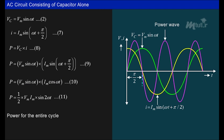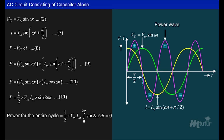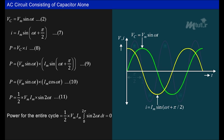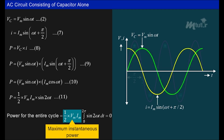The power for the entire cycle can be found by integrating the instantaneous power over the limits 0 to 2π, which equals zero. This is because the power in the positive half cycle and the negative half cycle are equal and of opposite polarity. The power wave is a sine wave of frequency double that of the voltage and current waves, with a maximum value of Vm·Im/2.